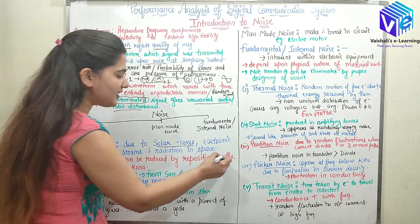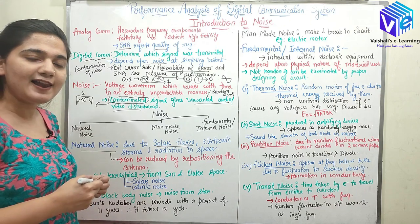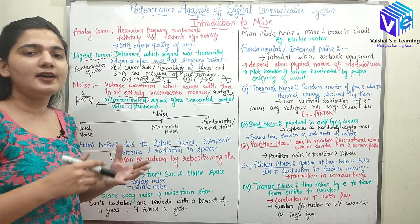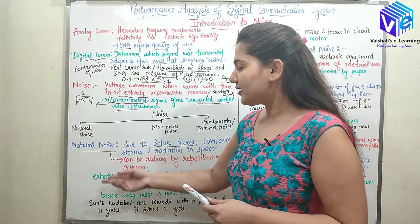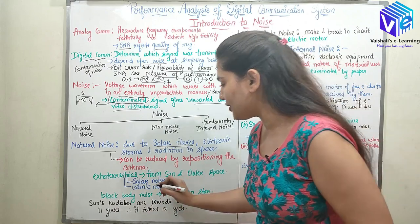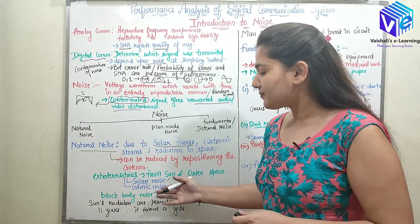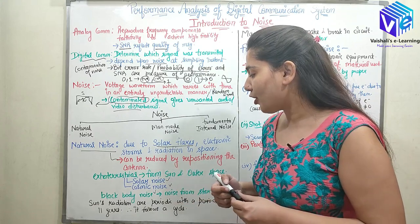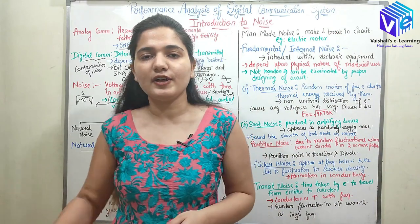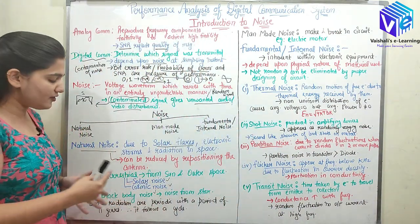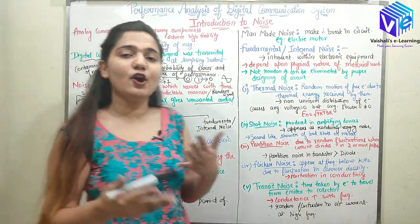Natural noise can be reduced by repositioning the antenna — by adjusting the antenna structure, position, and direction. Natural noise is classified into three subcategories: solar noise, cosmic noise, and black body noise. Solar noise comes from the sun, cosmic noise comes from outer space, and black body noise comes from the stars. Solar noise has a periodic nature which varies every 11 years — it follows a cycle and intensifies every 11 years, so the antenna needs to be repositioned accordingly.